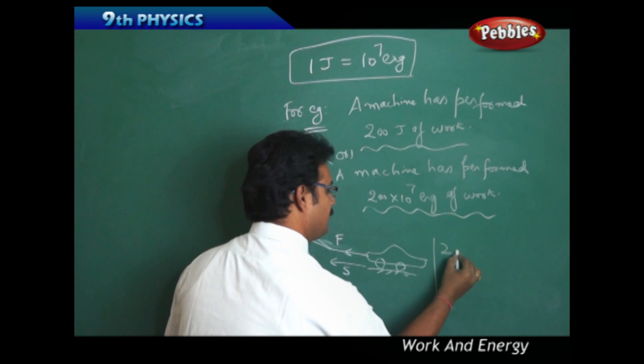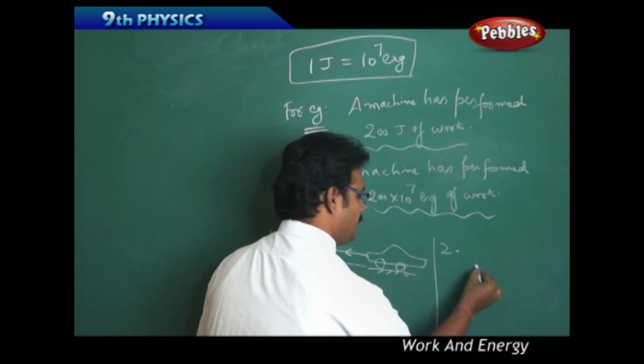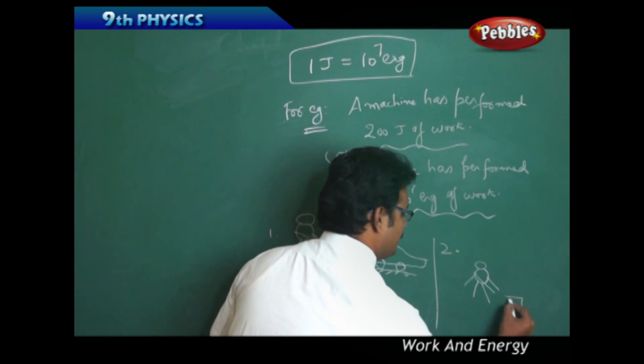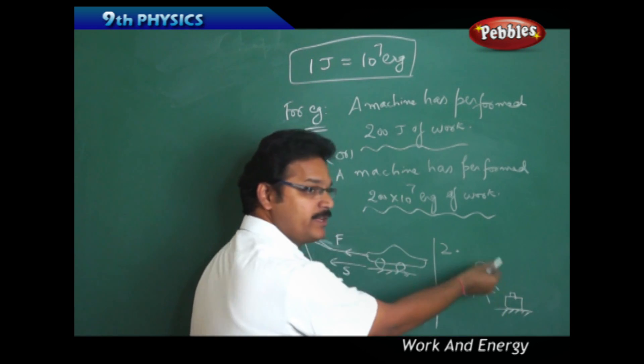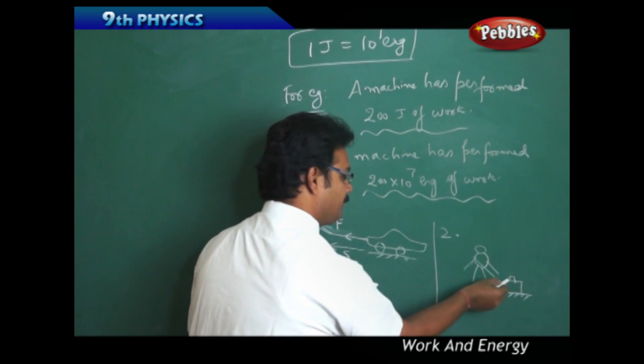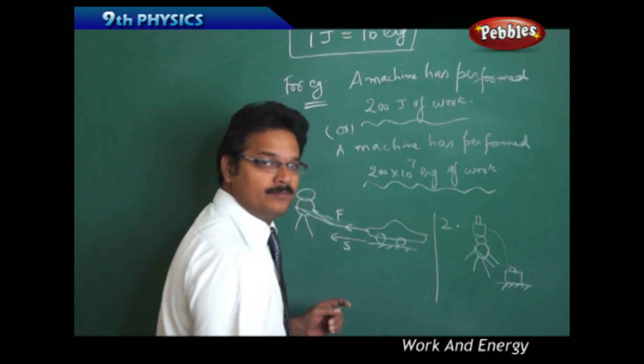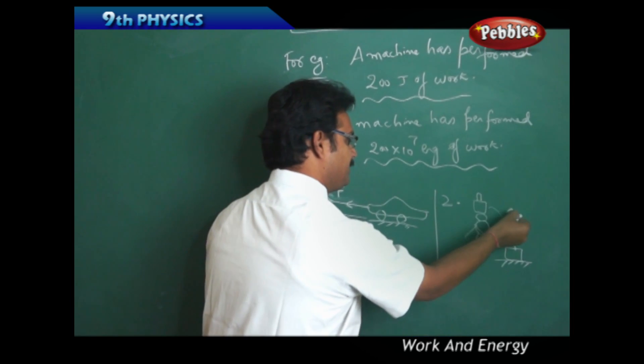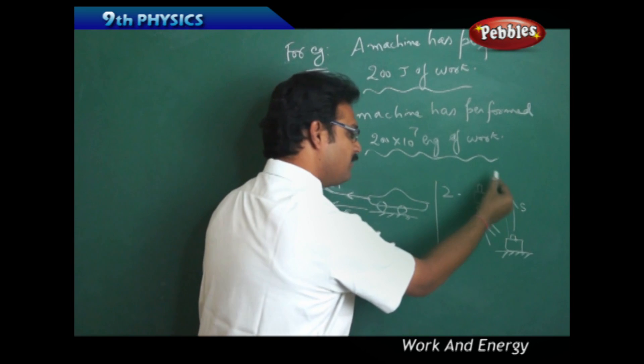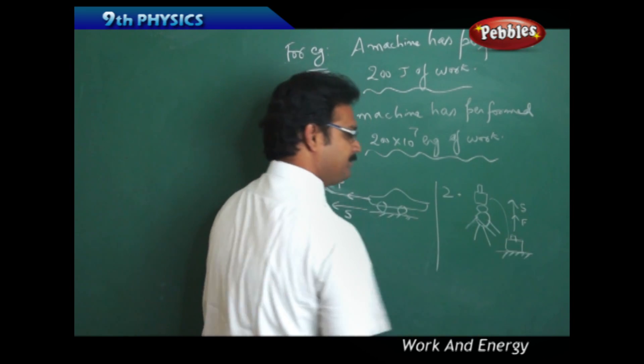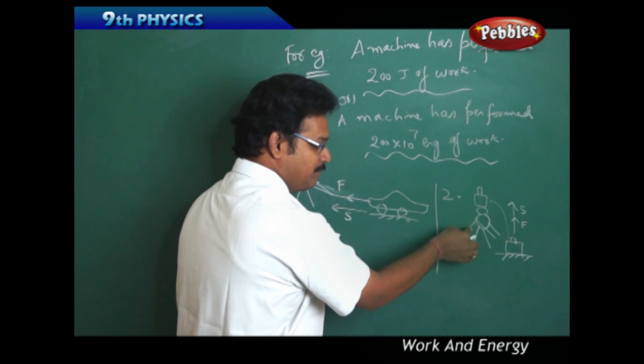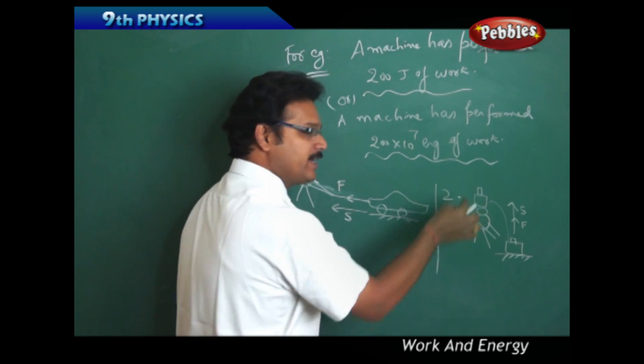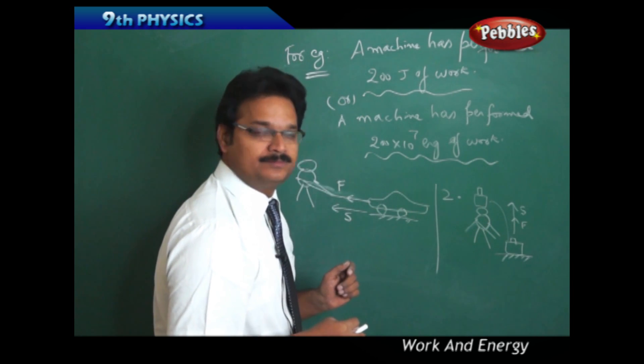Now take the second example. Suppose a person standing on the ground, there is a suitcase on the ground. Then he lifted the suitcase and put it on the head. Then the displacement is in the upward direction and the force applied is also in the upward direction. So we can say that as force and displacement are both in the same direction, we say this person performed work by lifting the suitcase and keeping it on his head.